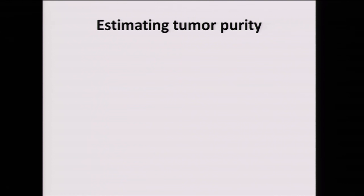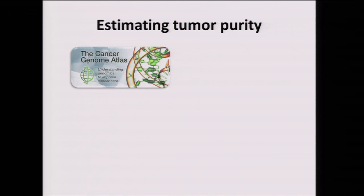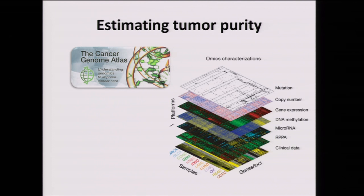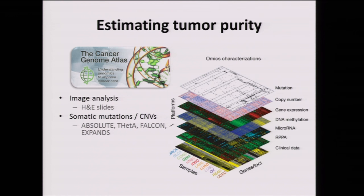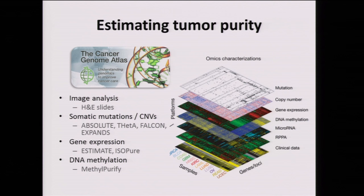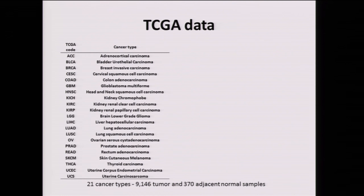How do you estimate tumor purity? The Cancer Genome Atlas allows us to use all the different omics characterizations to do that. We have this amazing database with data for 10,000 patients in many different cancer types. We can estimate tumor purity using H&E slides, somatic mutations, copy number variations, gene expression, and DNA methylation — and we can also combine all of them together.